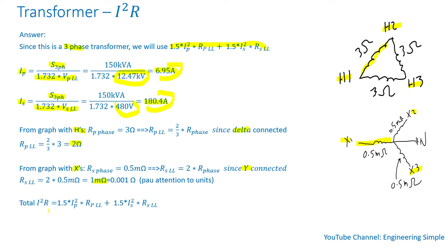The total I squared R is 1.5 times the primary line current squared times the primary line-to-line resistance, plus 1.5 times the secondary line current squared times the secondary line-to-line resistance. Plugging in the numbers gives 193.7 watts. Note this is not a practical transformer — it's just an example for calculation purposes.